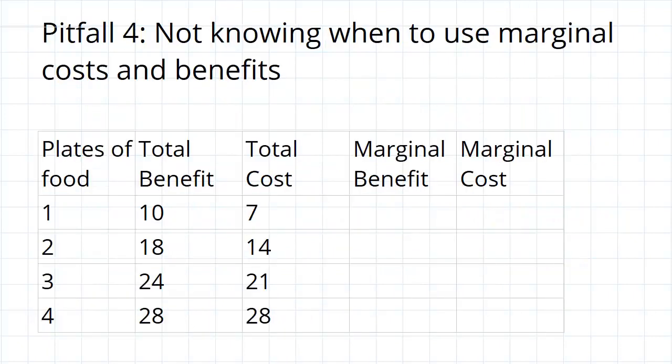Finally, we get to pitfall number four, which is not knowing when to use marginal costs and benefits.